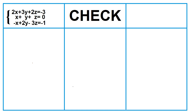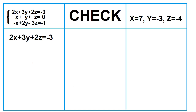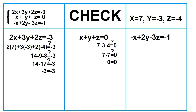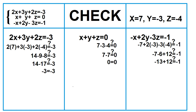Let's check by substituting the values into each of the equations. The first equation is 2x plus 3y plus 2z equals negative 3. Is 2 times 7 plus 3 times negative 3 plus 2 times negative 4 equal to negative 3? Yes, negative 3 equals negative 3. The second equation is x plus y plus z equals 0. Is 7 minus 3 minus 4 equal to 0? Yes, 0 equals 0. The third equation is negative 2x plus 2y minus 3z equals negative 1. Is negative 14 plus 2 times negative 3 minus 3 times negative 4 equal to negative 1? Yes, negative 1 equals negative 1.